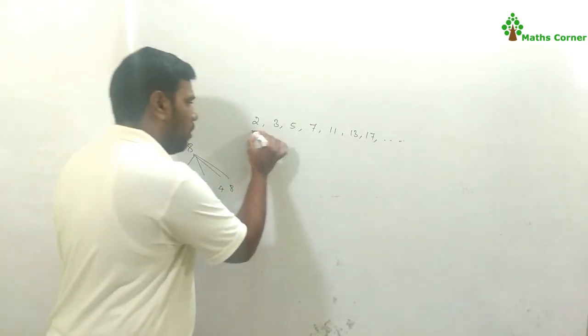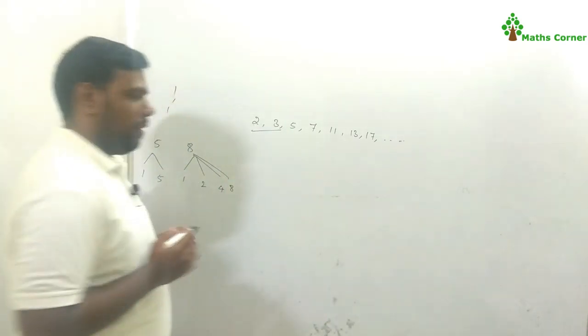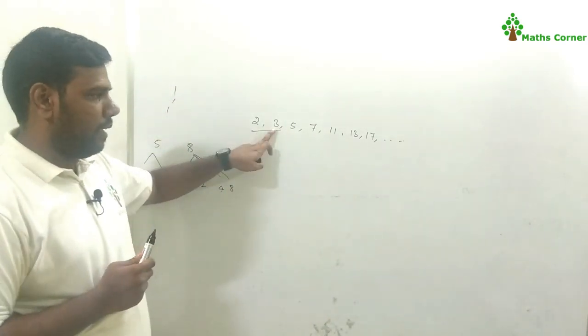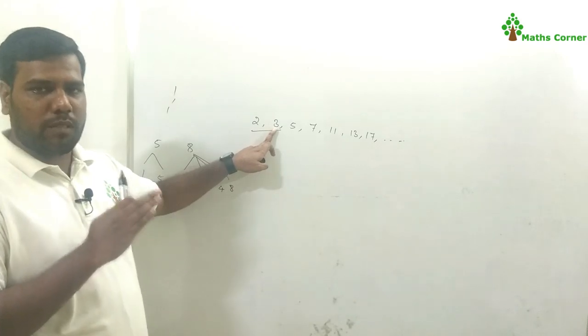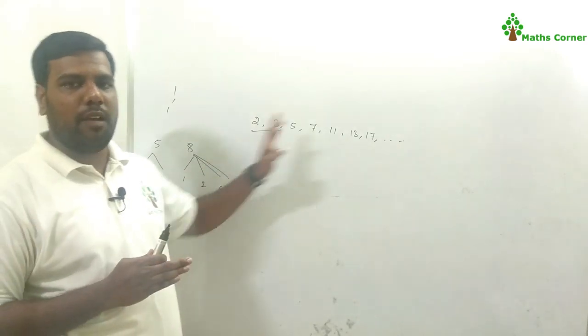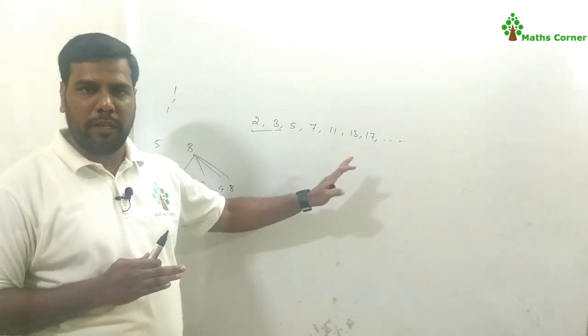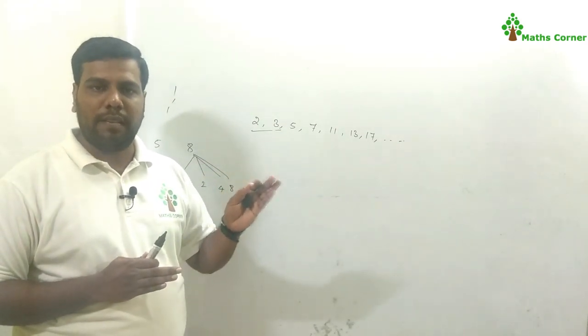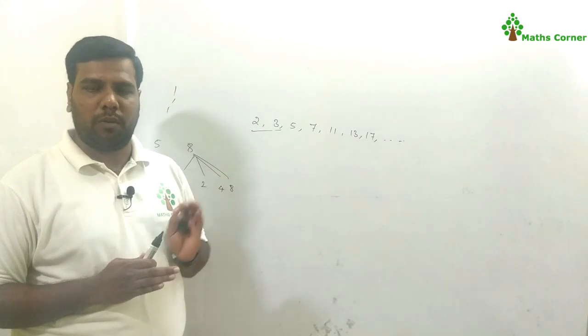2 and 3 are prime numbers. Every prime number greater than 3 can be expressed as a multiple of 6, plus or minus 1.